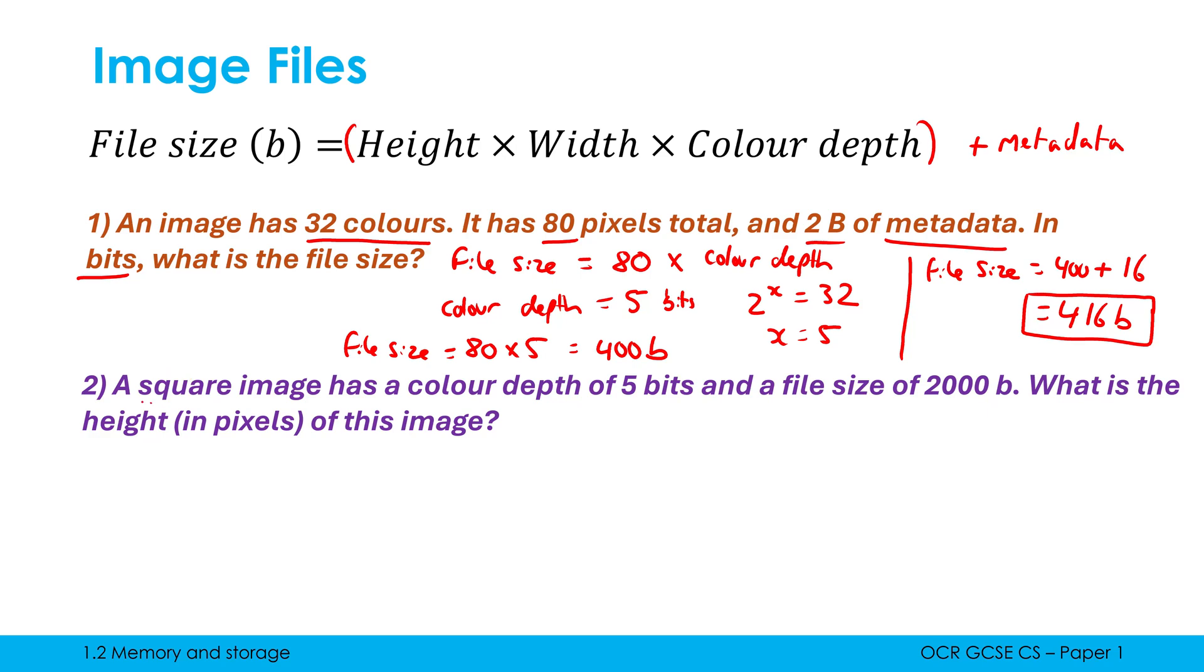In question 2, we're told a square image, meaning it's got the same height and width, has a color depth of 5 bits and a file size of 2,000 bits. What is the height of this image? So it's different this time because I'm having to rearrange my equation. We've got 2,000 bits is equal to the height times the width times 5. So the color depth is correct this time. It is just 5.